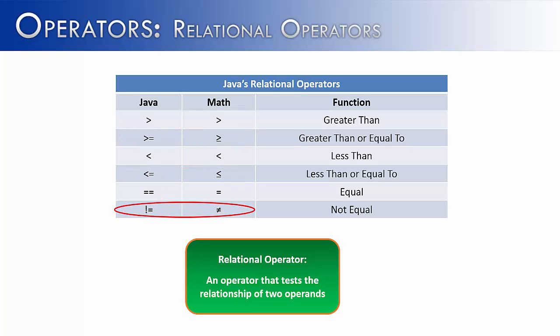The not equals, again there is no equal sign with a line through it on the keyboard, therefore it uses two symbols, the exclamation point and the equal symbol, to mean not equal to.